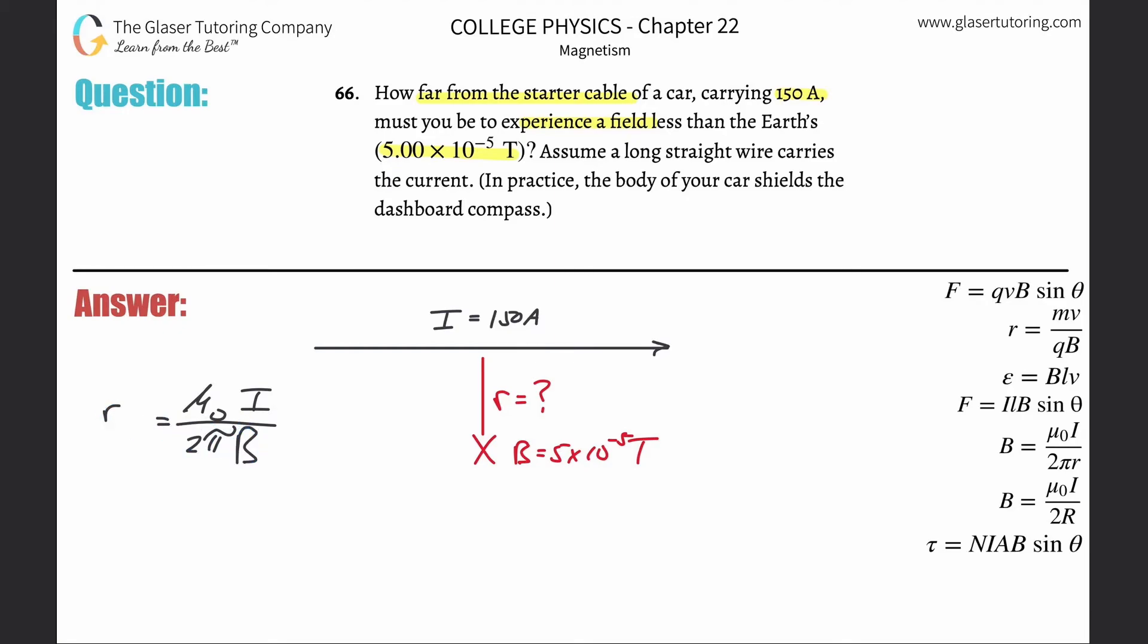This is just going to be 4π×10^-7—that's the permeability of free space—the current was 150, 2π, then times the magnetic field they said is going to be 5×10^-5 tesla. I'm writing an equals sign, but technically this should become a greater than symbol, but you know, don't worry about it.